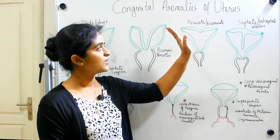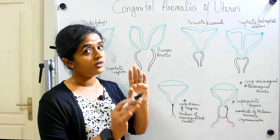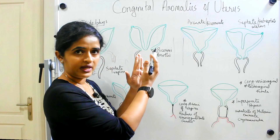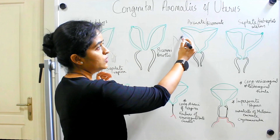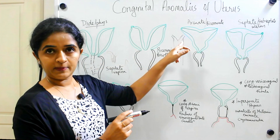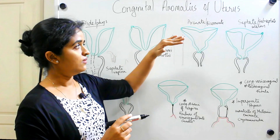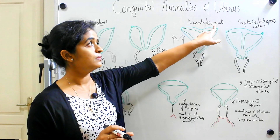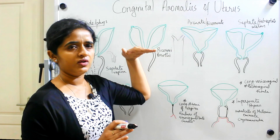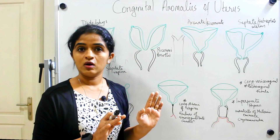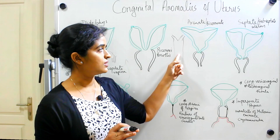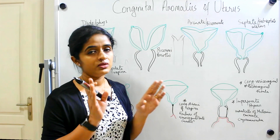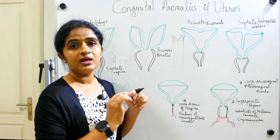The third category is arcuate uterus or bicornuate uterus, again due to non-fusion of the paramesonephric ducts at the upper end. If the upper end is not fusing properly, there will be a depression in the fundal region, which will be concave instead of the normal convex architecture. This portion looks like two horns — hence the name bicornuate. In this condition, the uterine cavity, cervical canal, and vagina are all single cavities, but only in the uppermost region it remains as two horns.